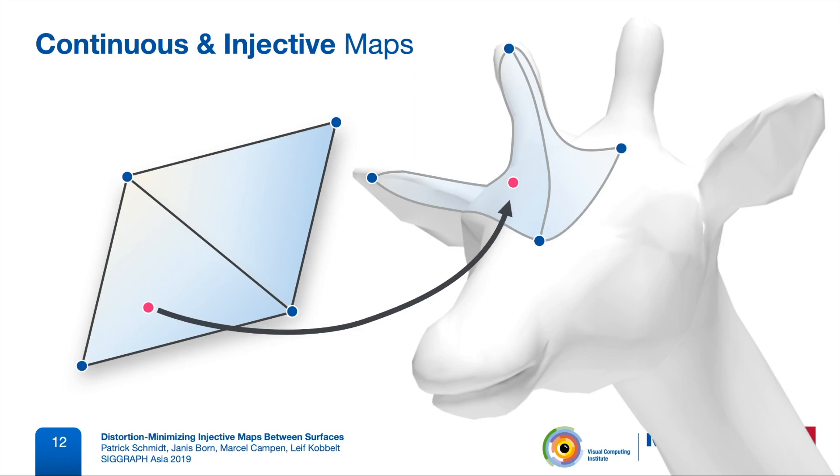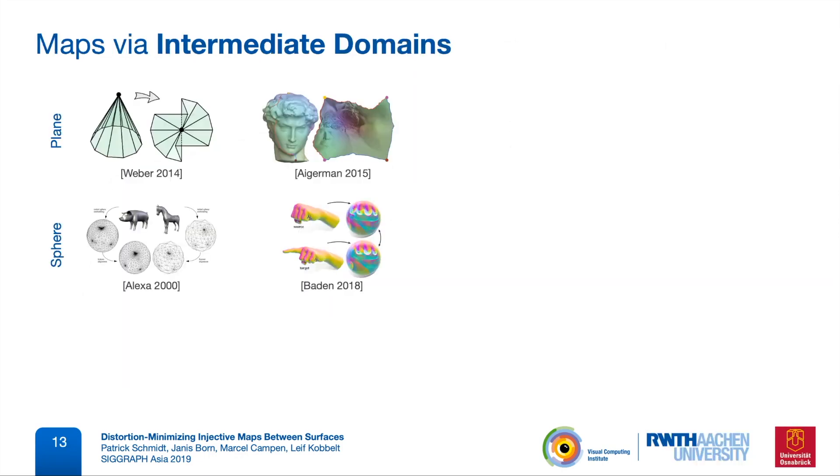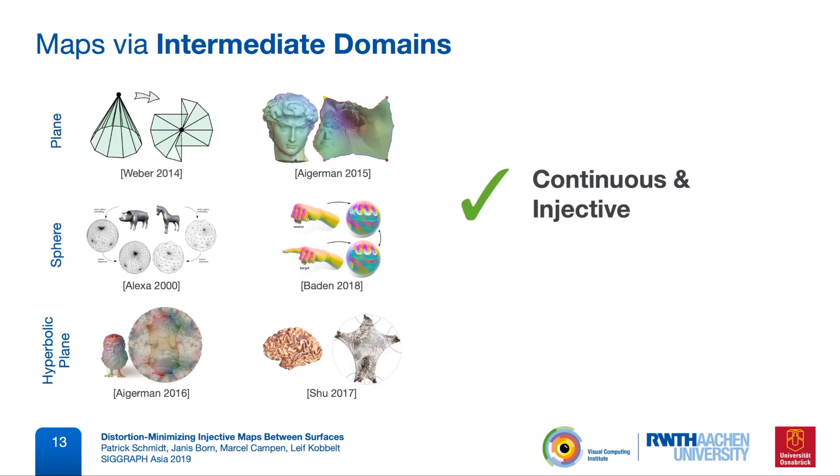So we are interested in the class of continuous and injective maps in a very strict sense. Some methods do produce this type of map, usually by combining two individual maps into a continuous intermediate domain, such as the plane, the sphere, or the hyperbolic plane. These maps are continuous and in most cases injective, but what they don't do is optimizing an end-to-end distortion measure. Instead, they usually optimize both maps into the intermediate domain separately.